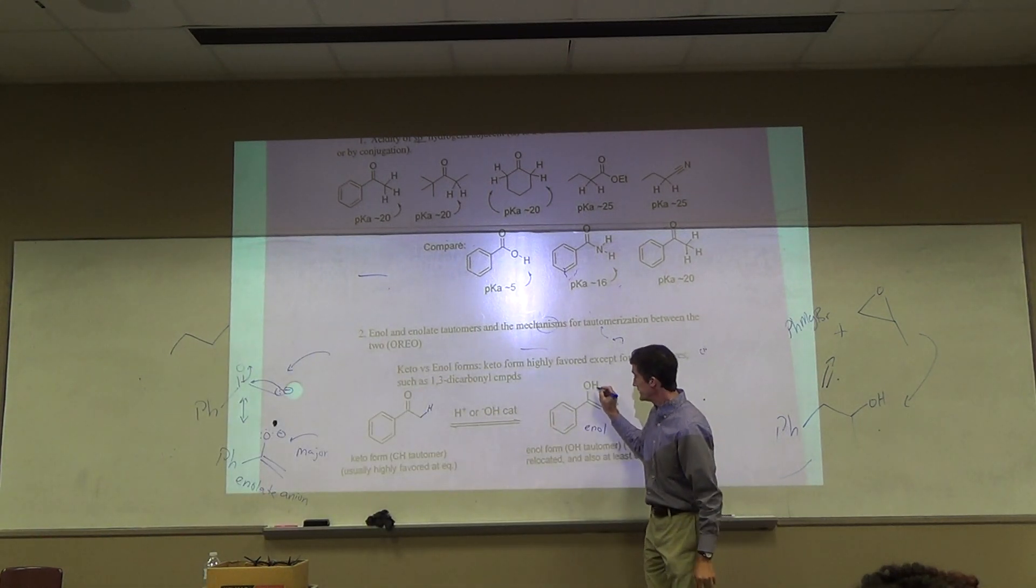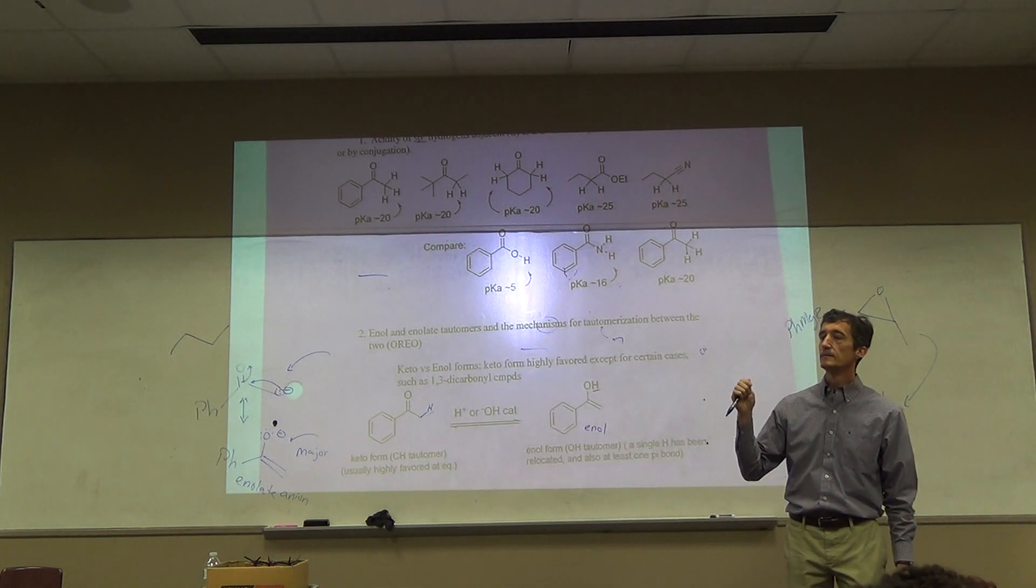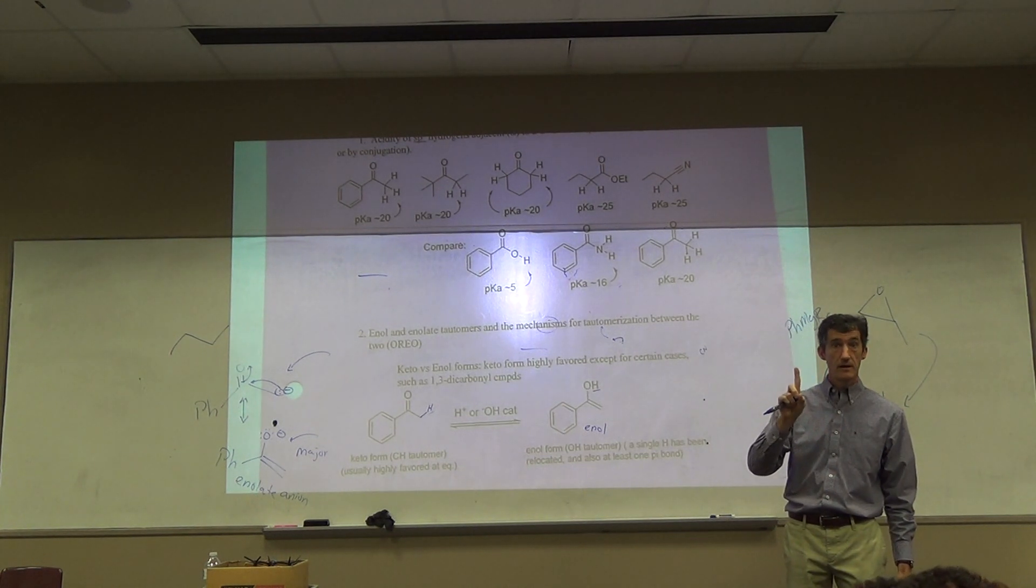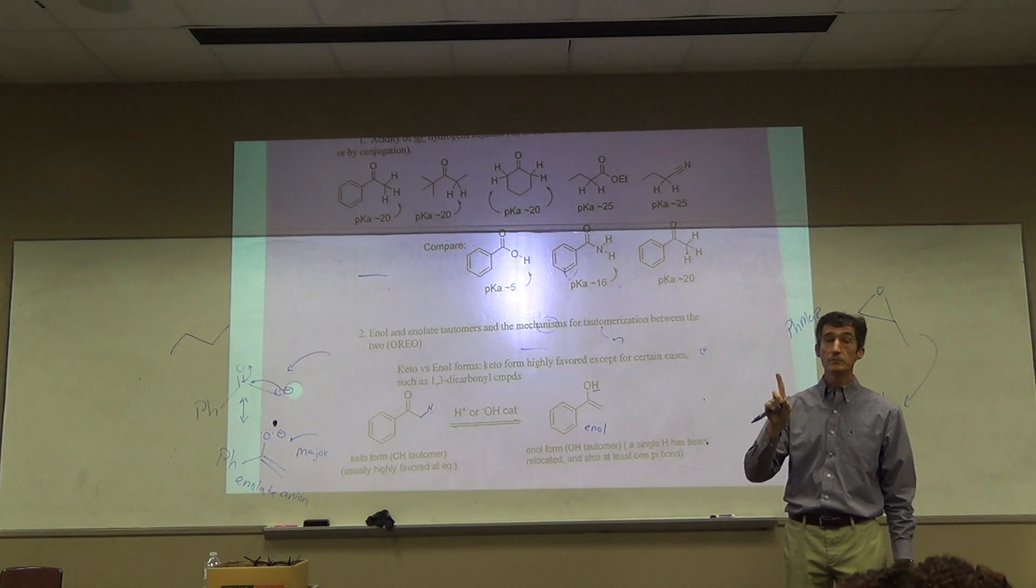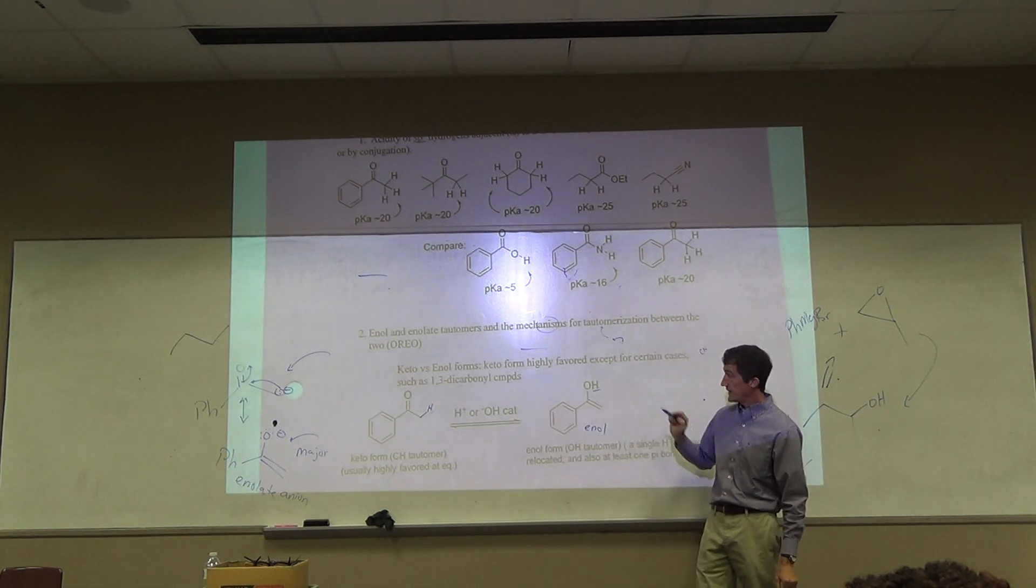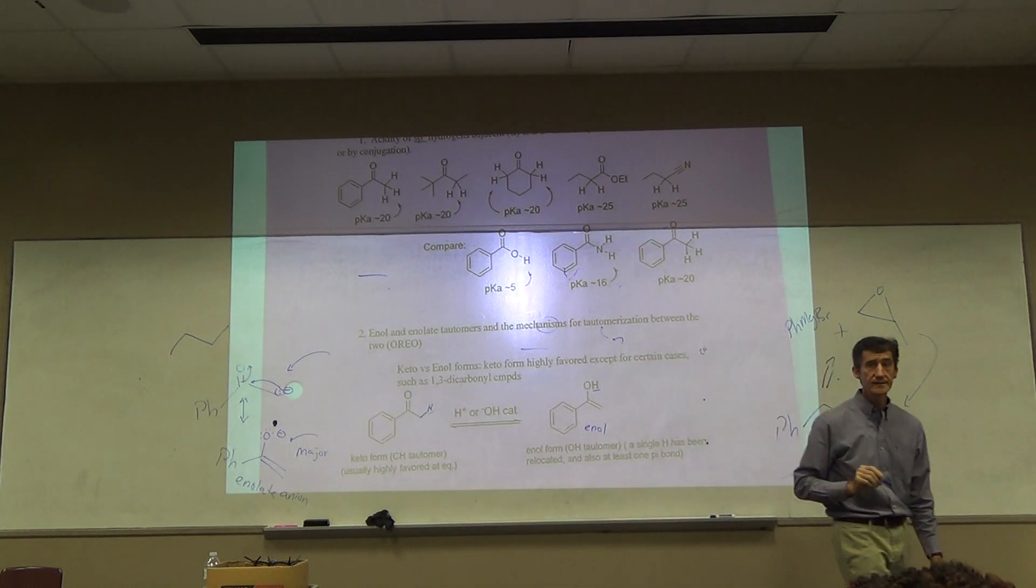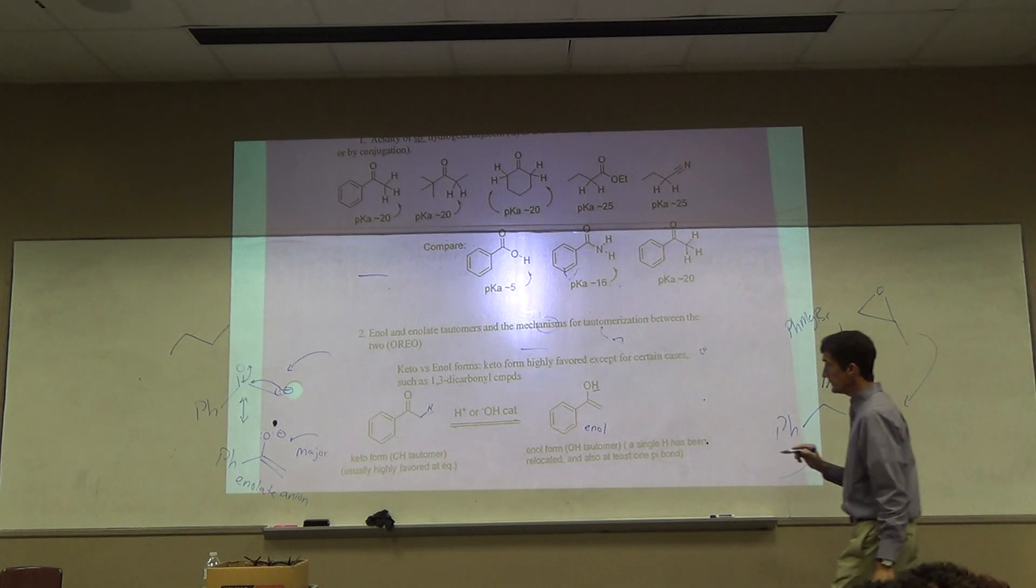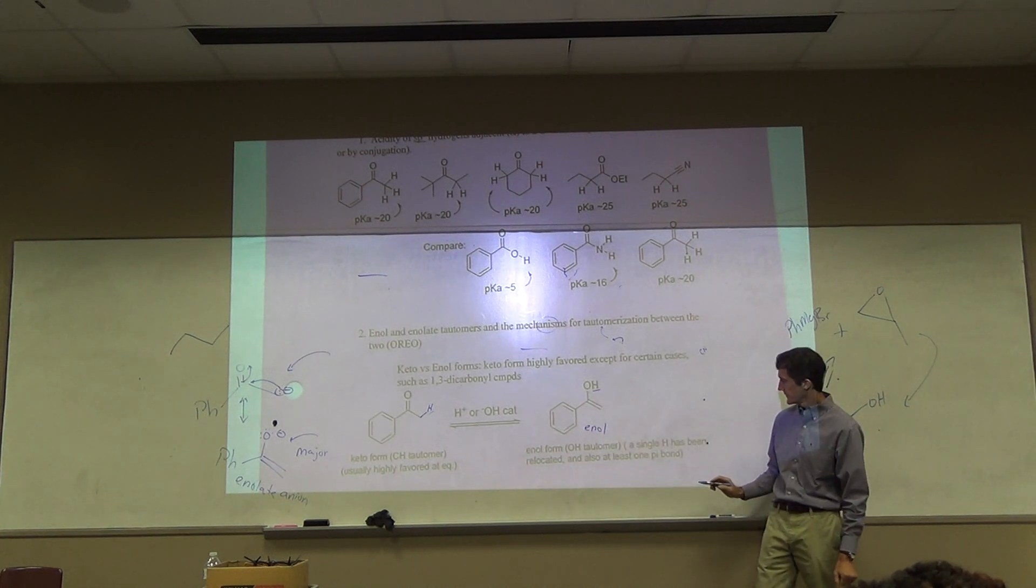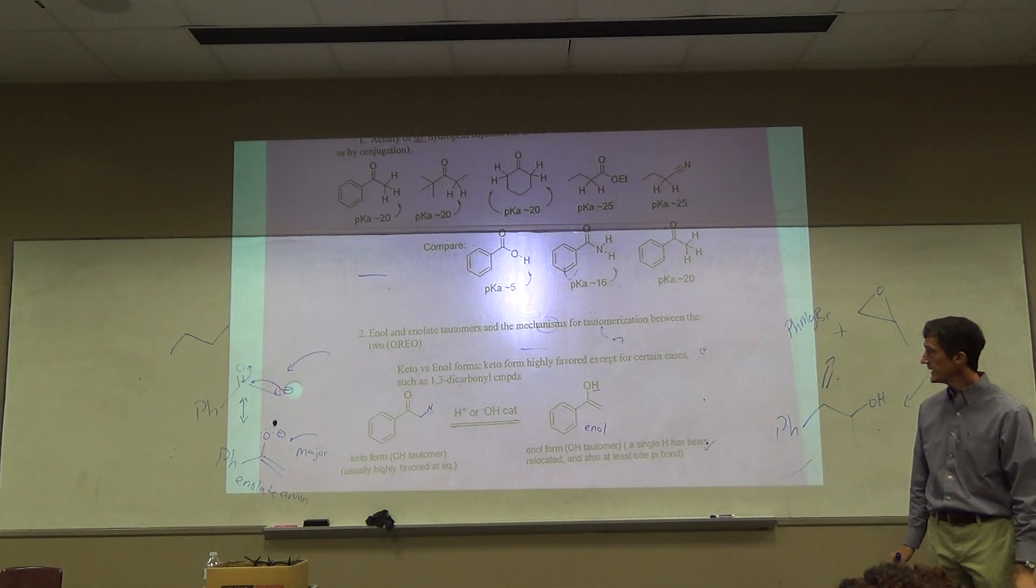This is also called the CH tautomer because the H is here on the carbon, CH. Where in this tautomer, the H that's getting moved, there's the H that's getting moved. What's the definition of a tautomer? One H and one pi bond here. Relocation of a single H and a pi bond. And at least one pi bond. It could be multiple pi bonds. We have relocated one hydrogen and the pi bond. The pi bond is between C and the O. Now the pi bond is between C and C. This would be called the enol form or sometimes the OH tautomer. There's your definition of tautomer. So organic one.